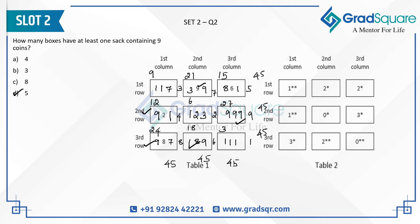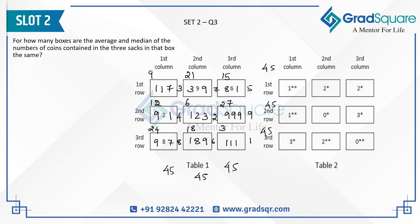The next question asks for how many boxes the average and median of coins in the three sacks are the same. Checking each box: median one, average three — not same; median two, average four — not same; median eight, average eight — same; median eight, average six — not same; one box where average and median match; median seven — not same; median six, average five — not same; median nine, average nine — same. In total, four boxes have matching average and median, so the answer is four.